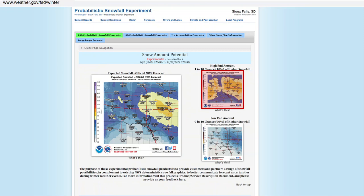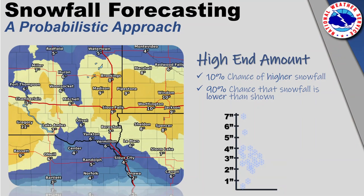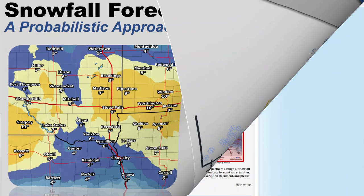Let's start with the high end amount. For all of you snow lovers out there, you could probably consider this your best case scenario. For everyone else, let's consider a reasonable worst case scenario. From a mathematical perspective, using all of the data available to us, there is only a 10% chance of receiving more snow than the values listed on this map — or to put it another way, a 90% chance of receiving less snow than the numbers listed.